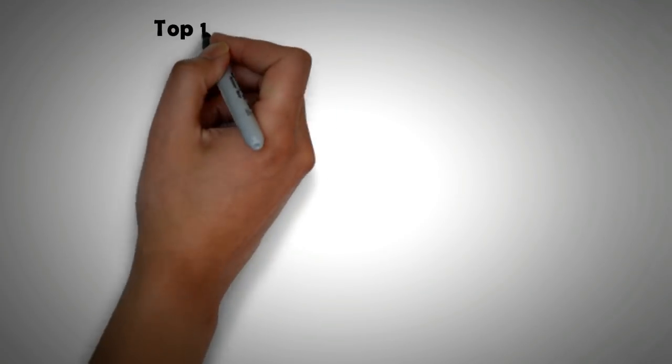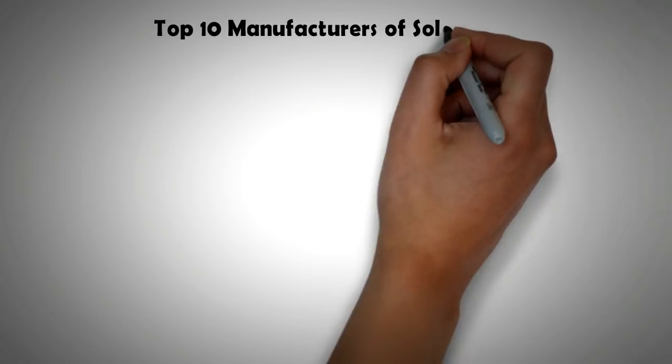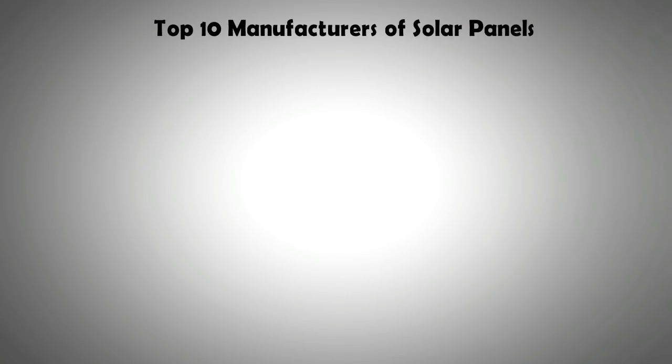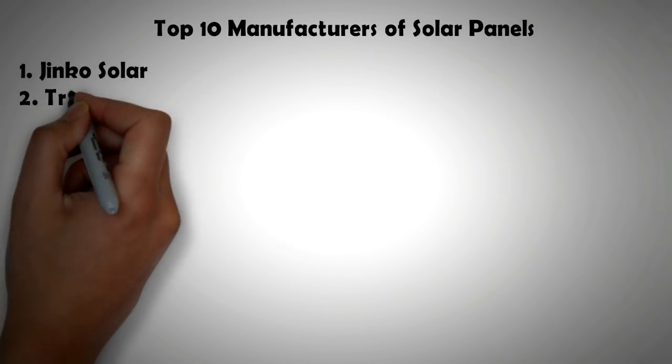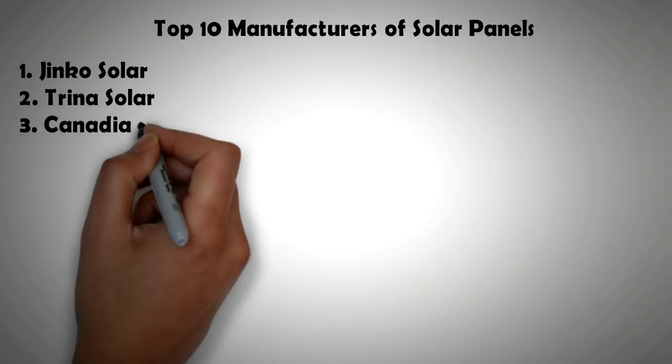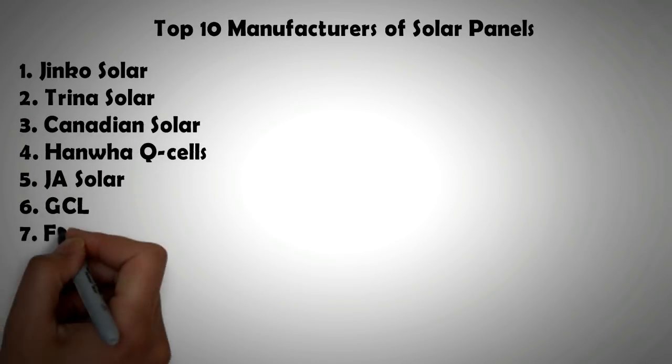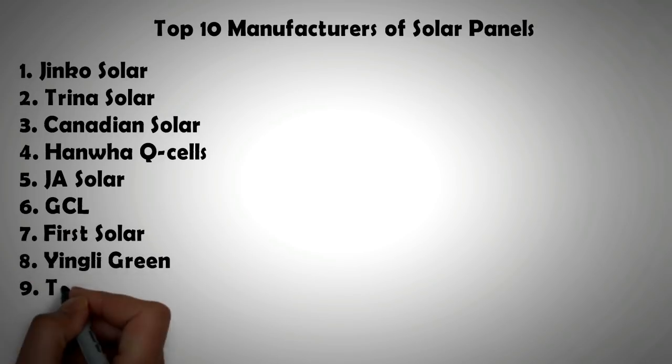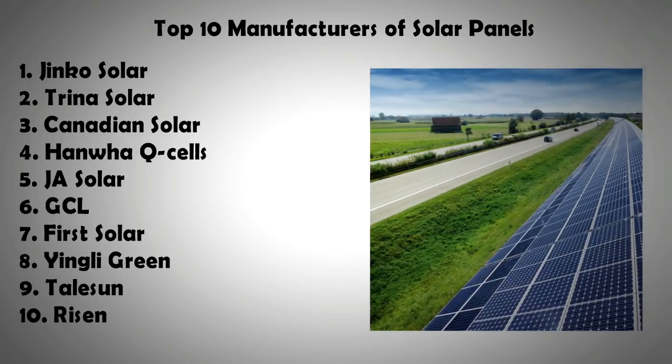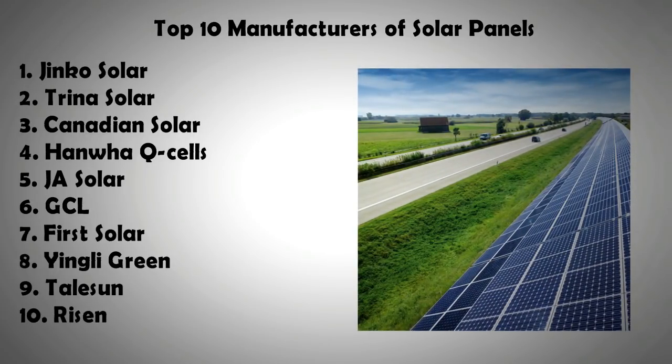Here is a list of top 10 PV manufacturers. At number 1, we have Jinko Solar. At number 2, we have Trina Solar. At number 3, we have Canadian Solar. At number 4, we have Hanwha Qcells. At number 5, JA Solar. At number 6, GCL. At number 7, First Solar. At number 8, Yingli Green. At number 9, Talesun. At number 10, we have RISEN.